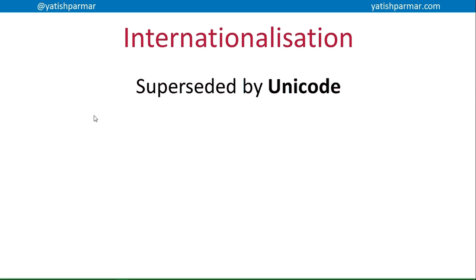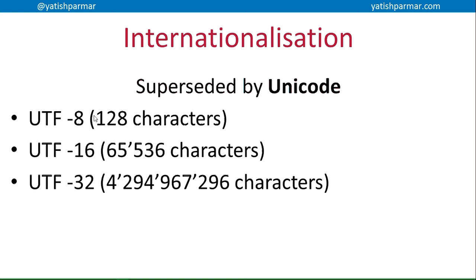ASCII has been superseded by Unicode. Unicode comes in different forms: UTF-8, which uses 8 bits and has 128 characters; UTF-16, which uses 16 bits giving you 65,500 characters; and UTF-32, which uses 32 bits — 4 bytes — giving you quite a large number of characters. That's 4.2 billion characters.